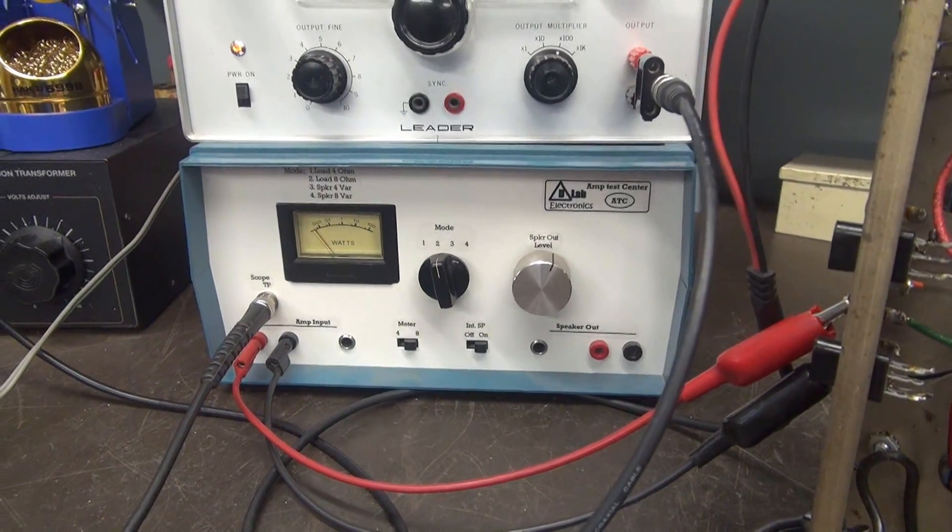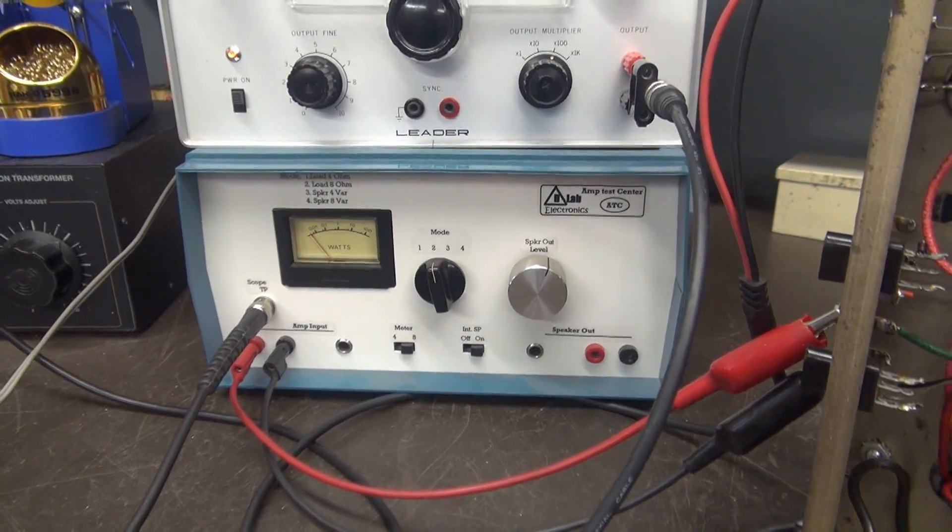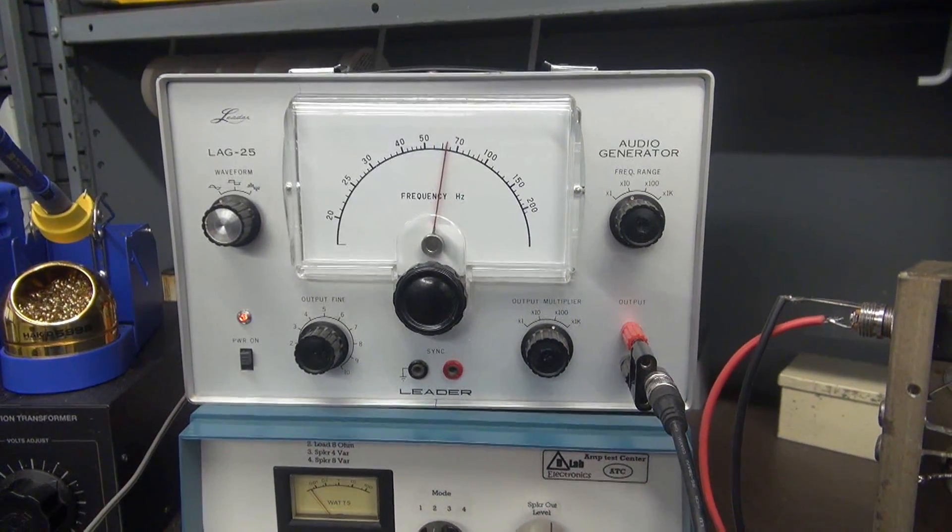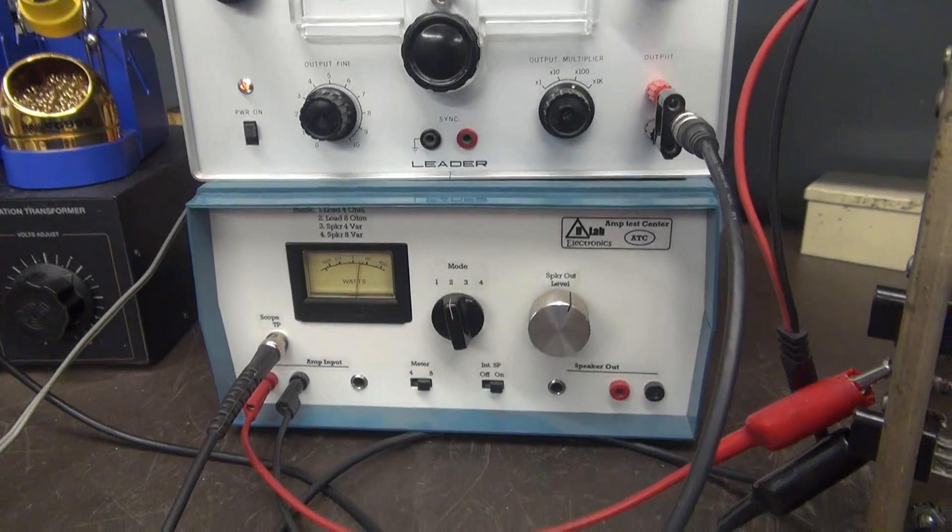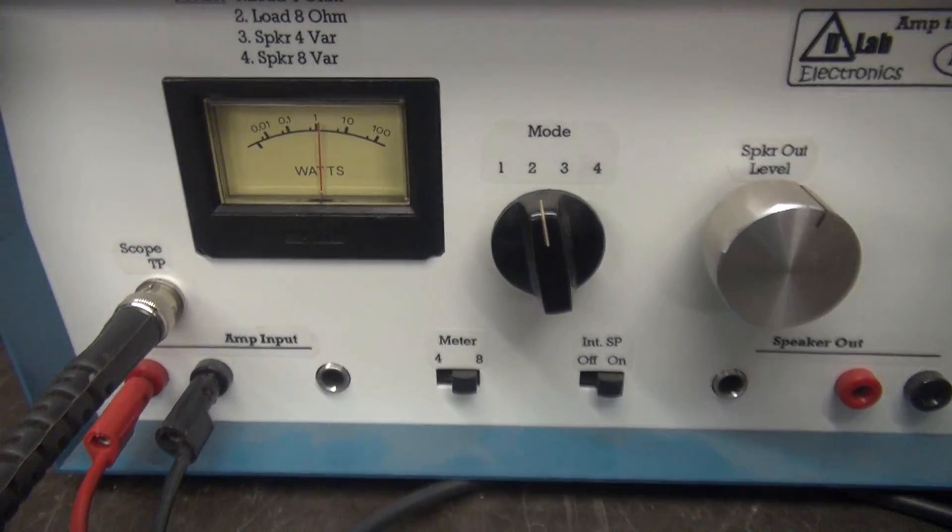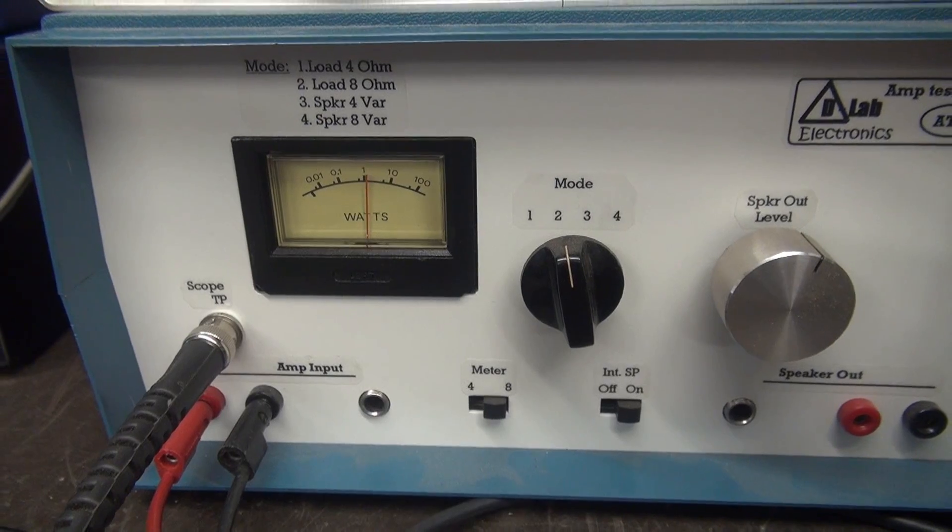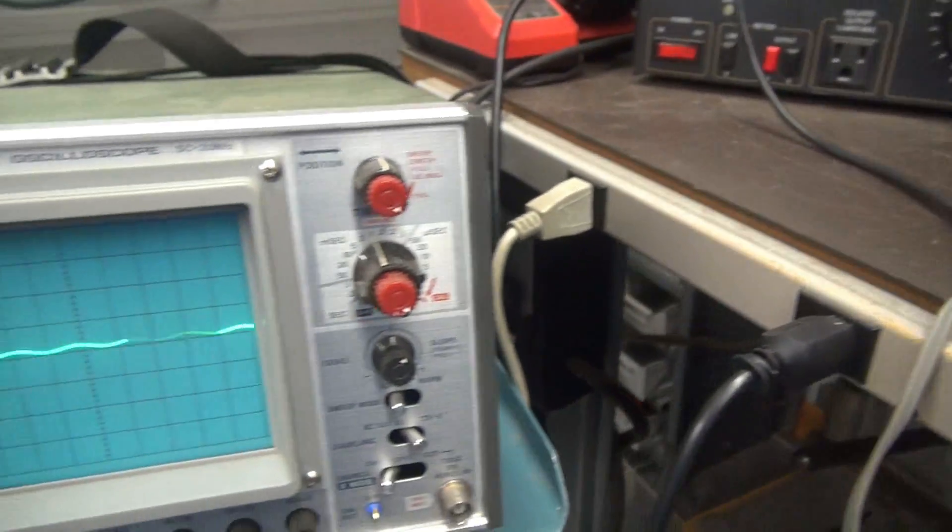So what I want to do is see approximately what the power output is, and look at the scope and see if it's clean. The audio generator is set up around 600 Hertz or so. I'm going to bring up the volume, and you can see the wattmeter. So I'm getting well over 10 watts, which I'd expect out of a pair of 6BQ5s. Let's take a look at the scope.